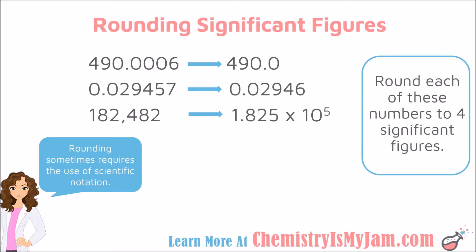Going down to the next one, I want to keep four significant figures. The first two zeros are not significant, so I keep them but I do not start counting my four significant figures there. I start counting at the first non-zero digit: I keep the 2, the 9, the 4, and then cut off after the 5. I look at the next digit — it is above 5, so this number rounds up to a 6. My number looks like 0.02946.